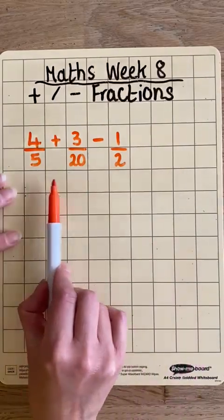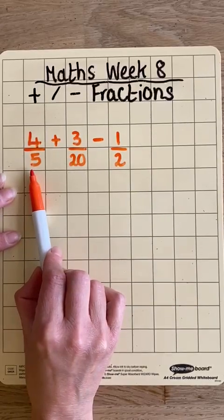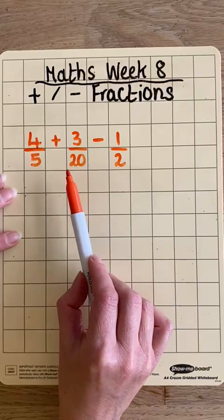In this case here, I'm going to choose 20 because I know I can times the 5, and I can times the 2, and I can make a 20.